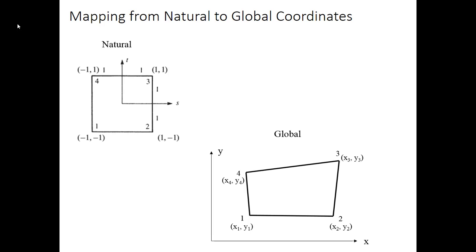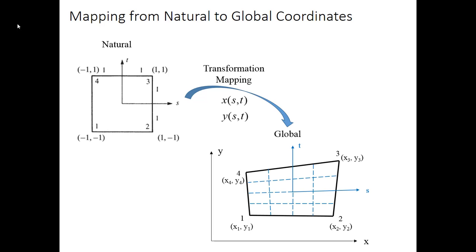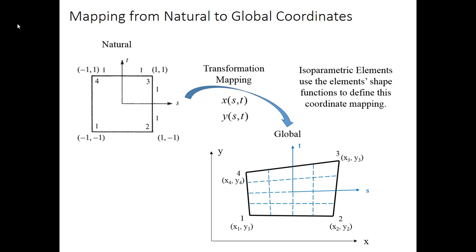In the global system, each one of these nodes has coordinates x1, y1, x2, y2, and so on. We need some correspondence from node 1 in global with coordinates x1, y1 back to node 1 in the natural with coordinates negative 1, negative 1. We need to define a transformational mapping that gives us the x coordinate for every corresponding S and T coordinate, and similarly the y coordinate for every S and T coordinate. That means we can map a grid corresponding to the natural coordinate system within this single element — putting the S and T coordinate system somewhat warped inside this element. When we do this mapping with an isoparametric element, we use the element's shape functions previously defined for displacements to map position from natural to global.